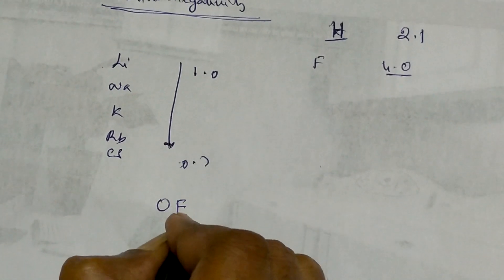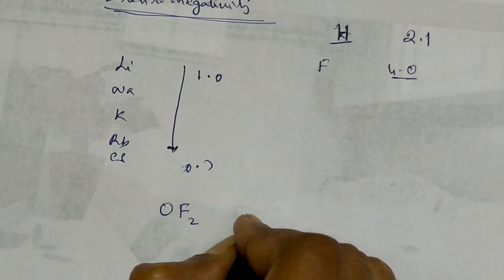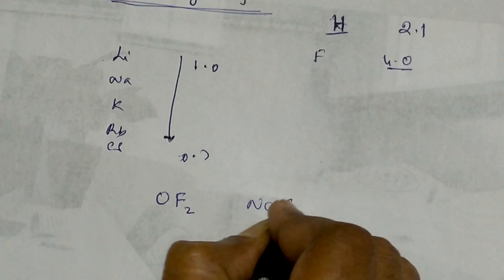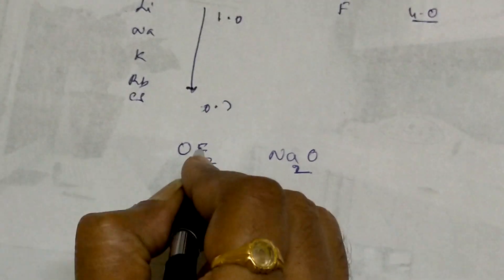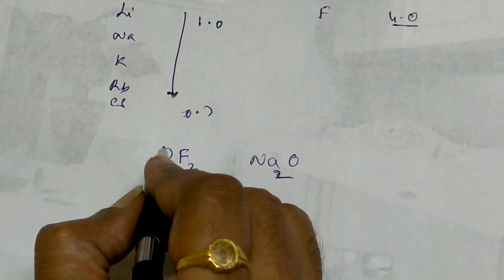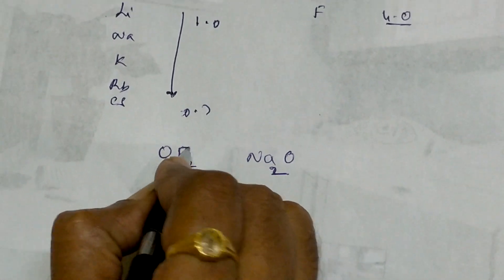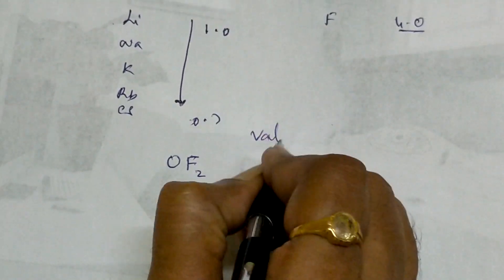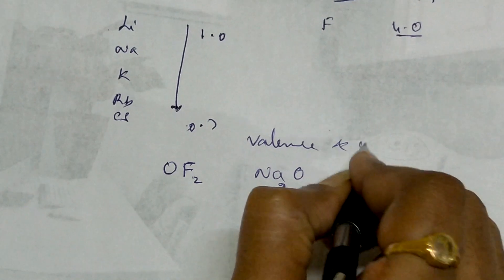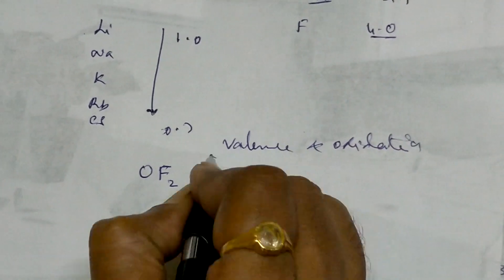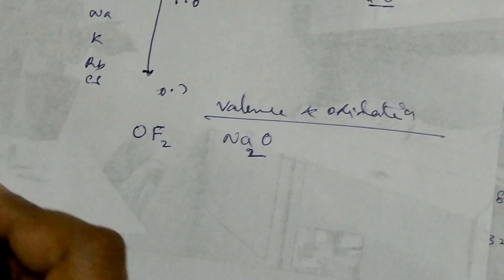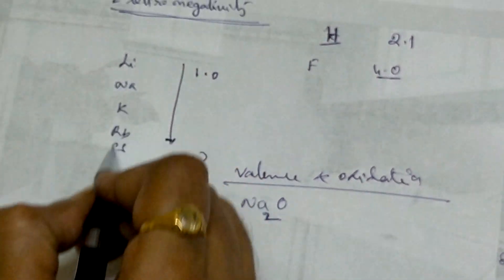One peculiar example is oxygen difluoride (OF₂) and sodium oxide (Na₂O) — take these two examples. In valency and oxidation states, for group 1 elements like lithium and sodium, the valency will be one.